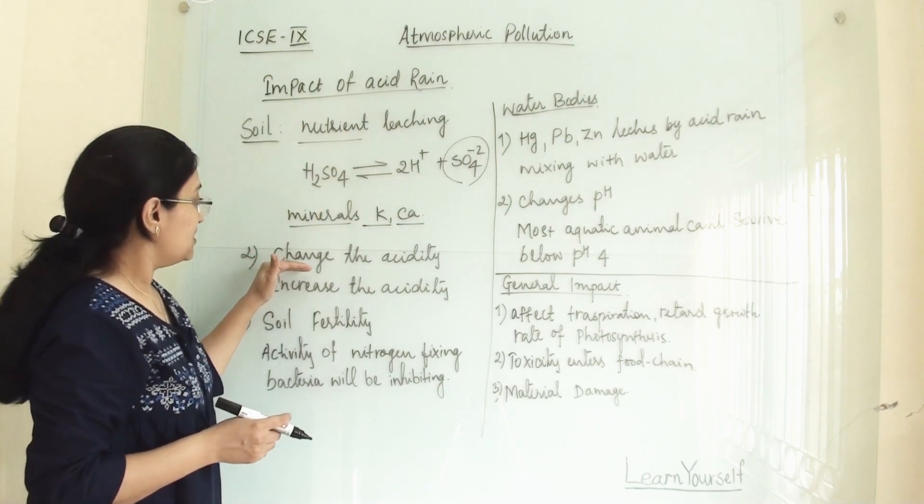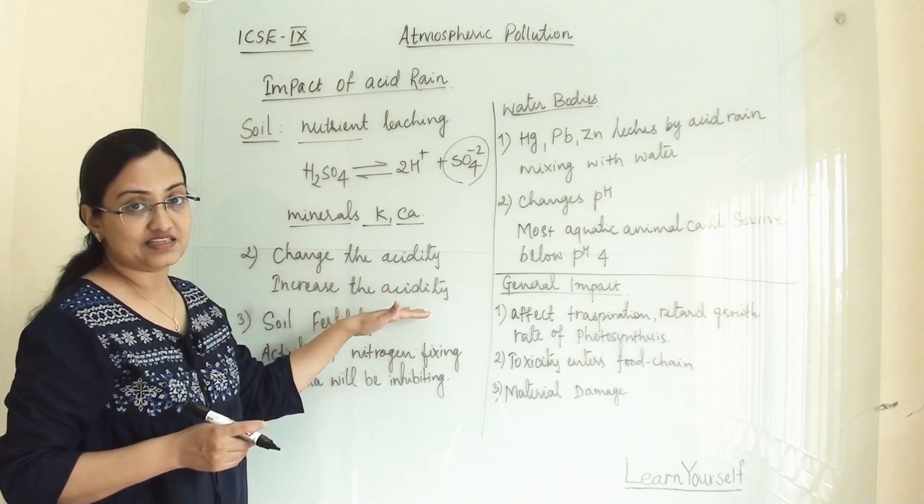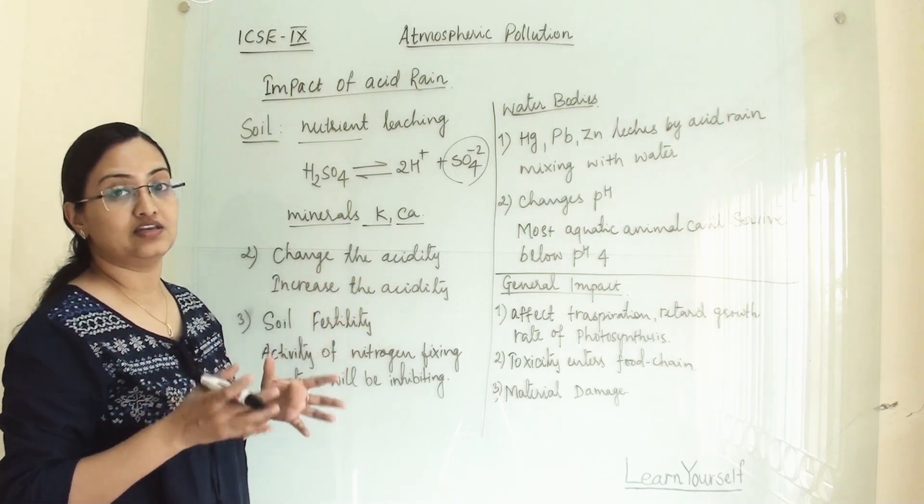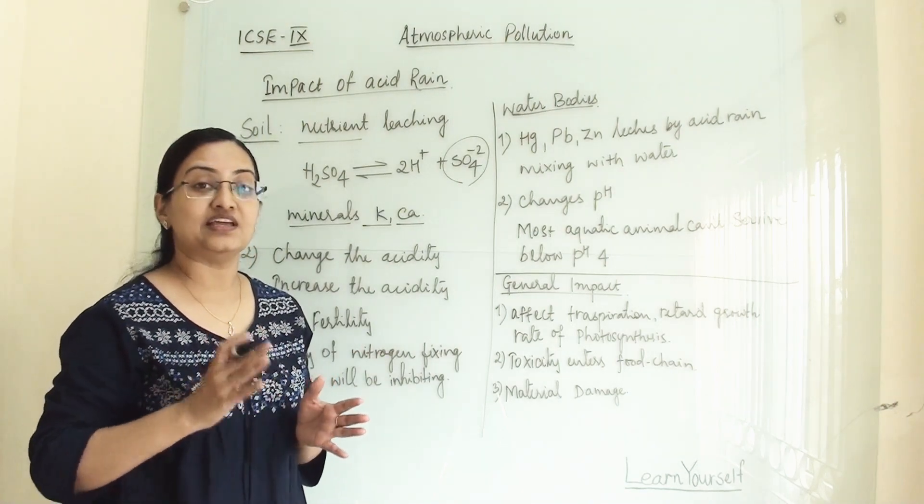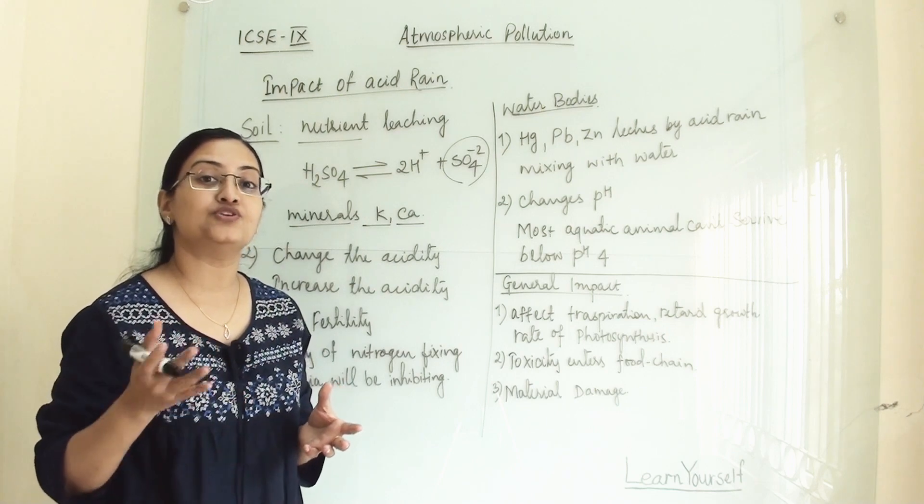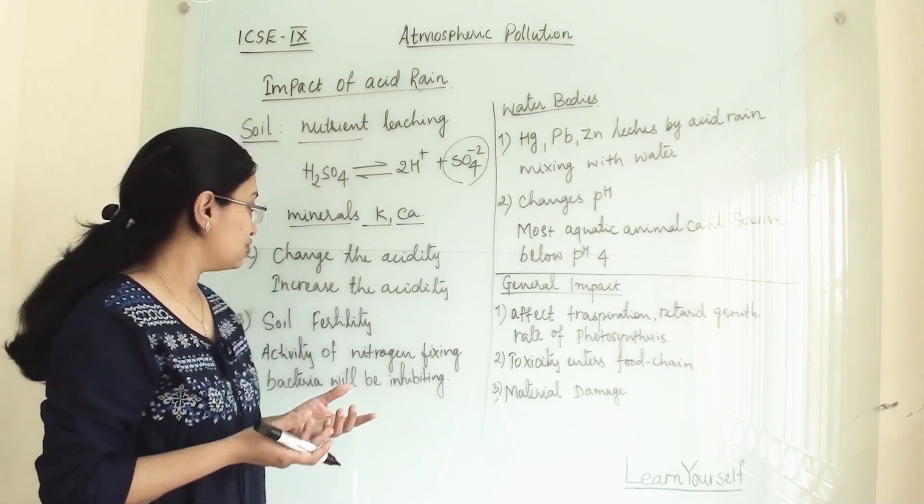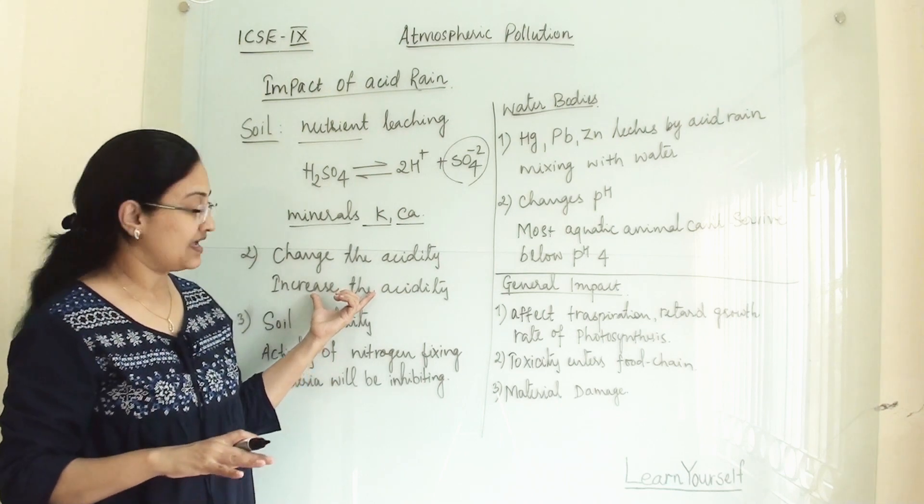Second is change in acidity. This will increase the acidity, that means the pH of the soil will decrease. It will increase the acidity, so it won't be suitable for majority of the crops. So you have to do some treatment on the soil to reduce its acidity.